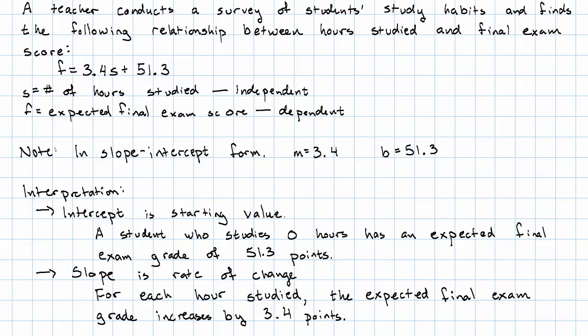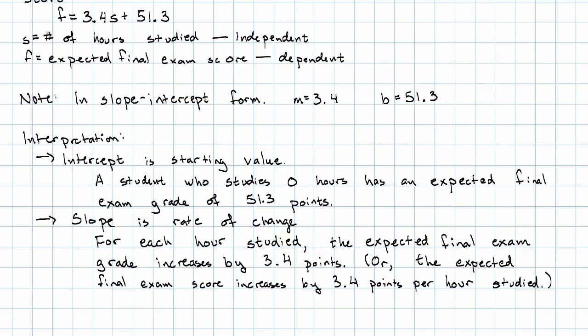Every time s goes up by one, f goes up by the slope. We interpret the slope as the rate of change, 3.4 points per hour studied in this case. We could also phrase this as the expected final exam score increases by 3.4 points per hour studied.